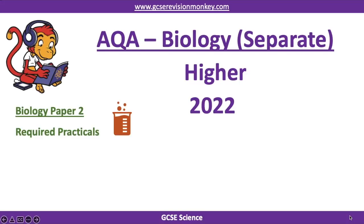Hello and welcome to this Revision Monkey video on the required practicals that are going to be in Biology Paper 2. This video is for the AQA specification and it is for separate scientists only — those are students that do six one hour and 45 minute exams at the end of their course, sometimes called triple scientists in some schools, and this is for the higher tier.